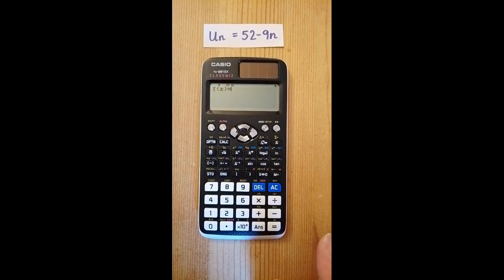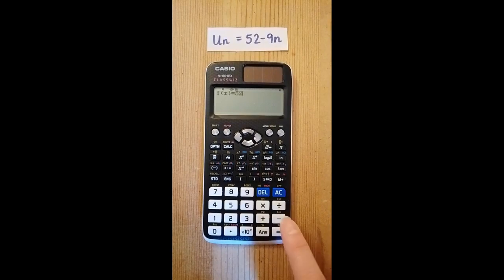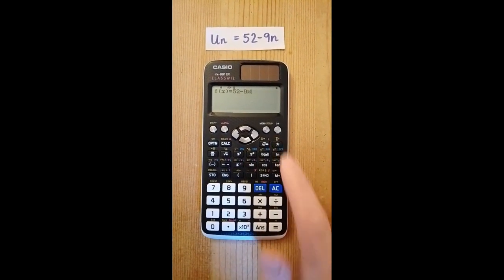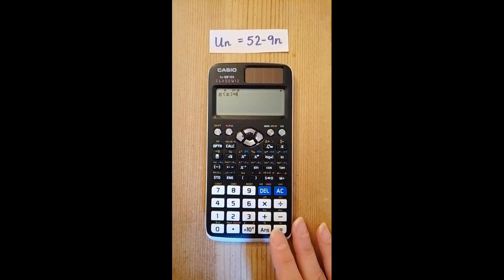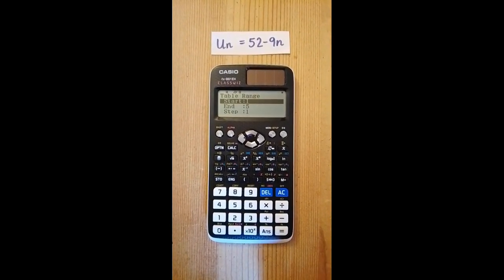Type in your nth term using x instead of n, so 52 subtract 9x, then press equals. We don't want the second function, so just press equals without typing anything in.